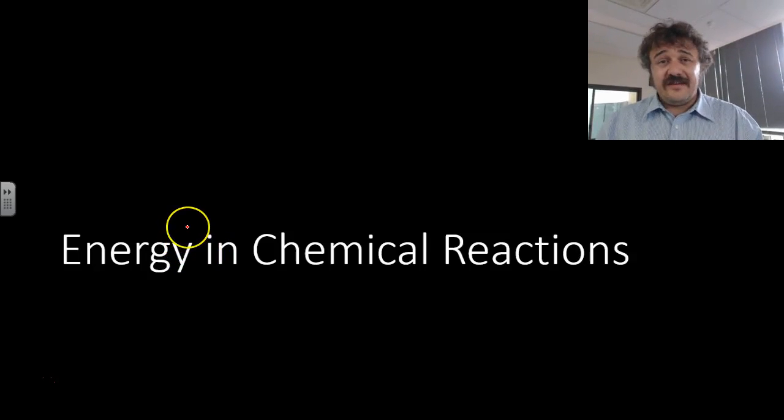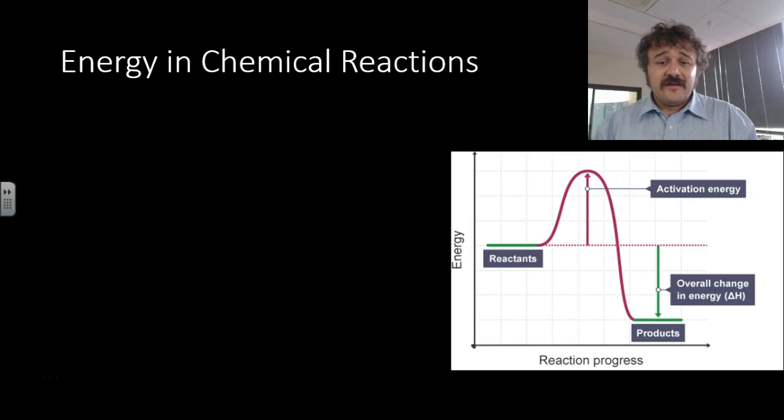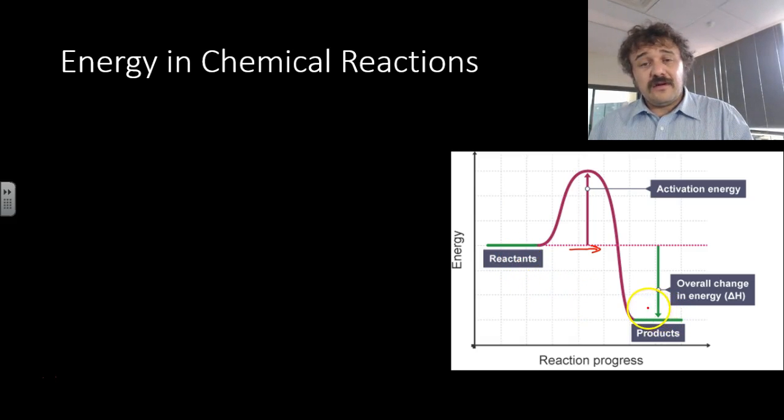Alright, so let's have a look at the energy in chemical reactions. So over here we can see two parts of our equation. You could draw a little goes-to symbol there, and on one side of our reaction we've got reactants and on the other side you've got products.